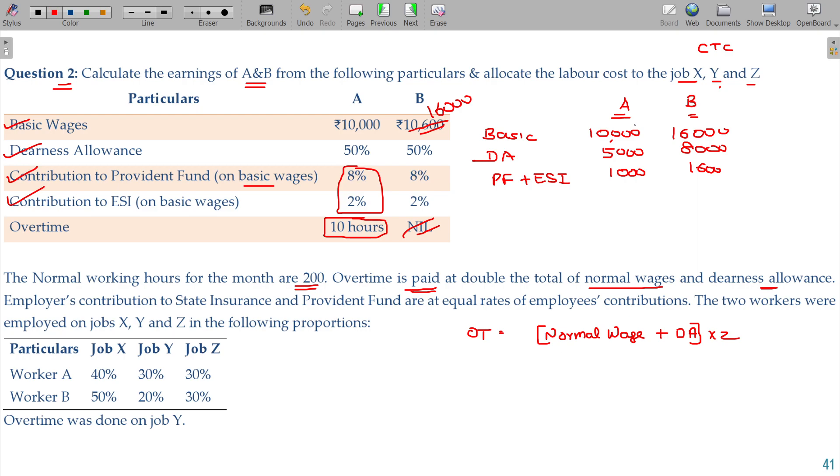Normal wage, 10,000, DA, 5,000, 10,000 plus DA, 5,000, into 2, but this is for a month period, which consisted of 200 hours. 15,000. 150 per 6, 10 hours and so on, the overtime wages being 1,500, applicable for A only not for B.